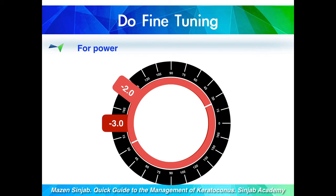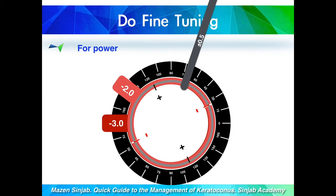Then I fine tune the power. The handle is not aligned with the axis of the cylinder — instead, the minus sign of the cross cylinder is superimposed over the axis of the cylinder. I ask the patient position 1 or position 2. If the patient says a position with plus values over the cylinder is clearer, it means I need to reduce the power of the cylinder. So I reduce it to minus 1.5, and may retune using the 0.5 cross cylinder for finer tuning.